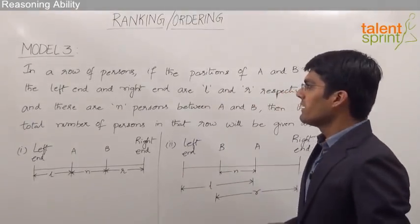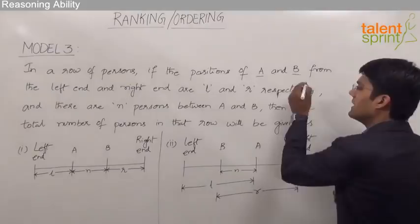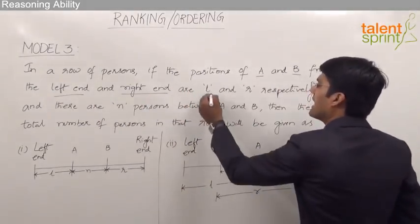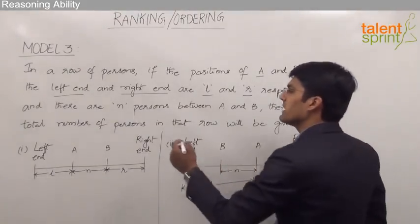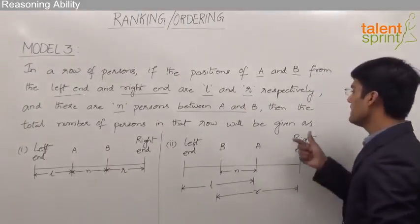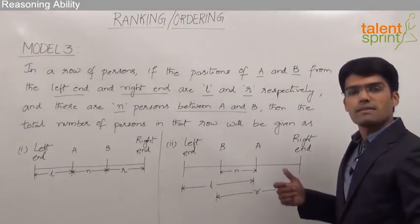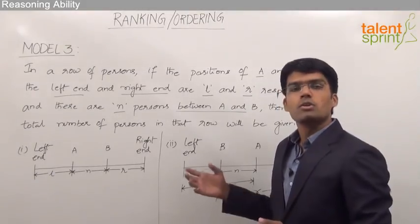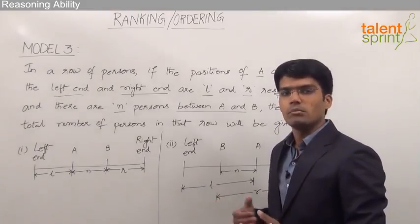In a row of persons, if the positions of A and B from the left end and the right end are L and R respectively, and there are N persons between A and B, then the total number of persons in that row will be given as follows. Two answers are possible here, so let us understand both of them.